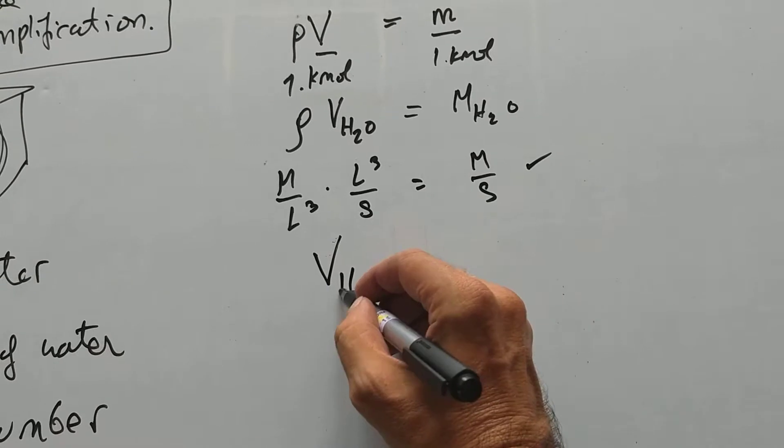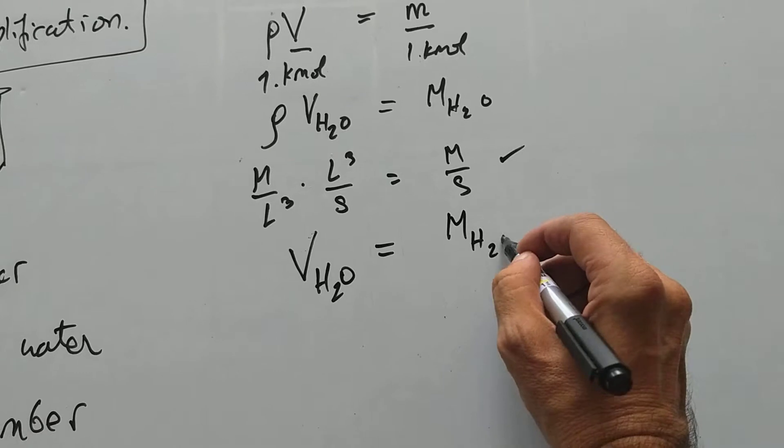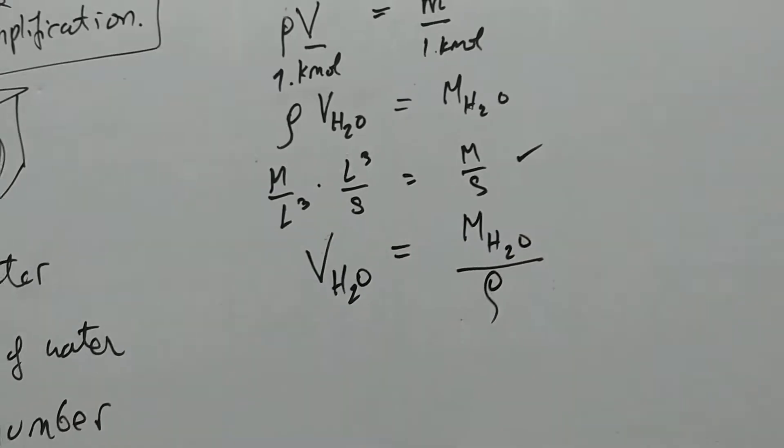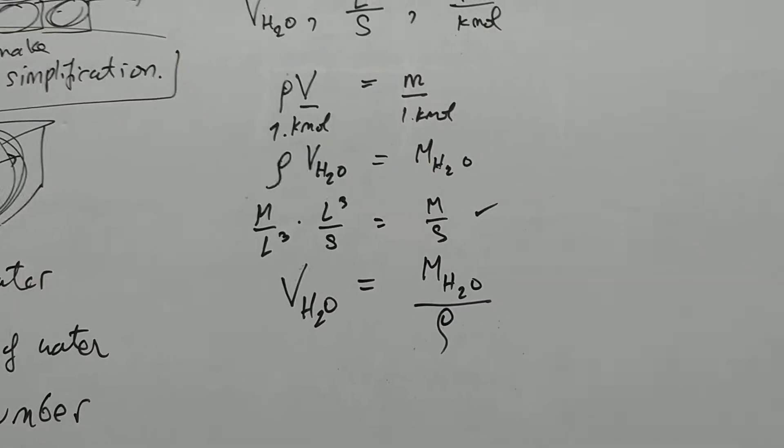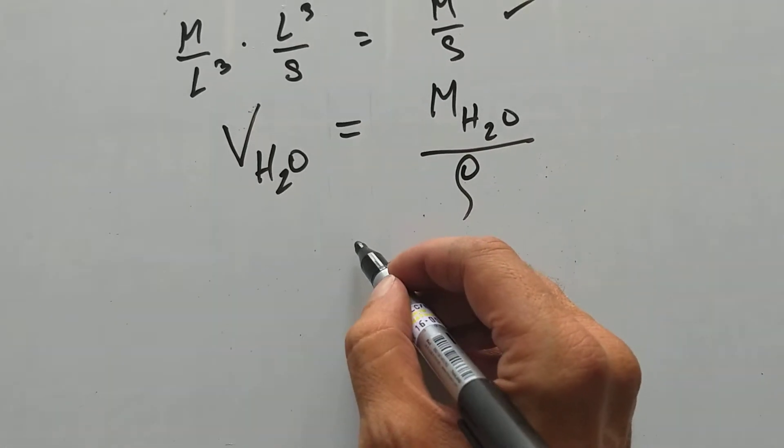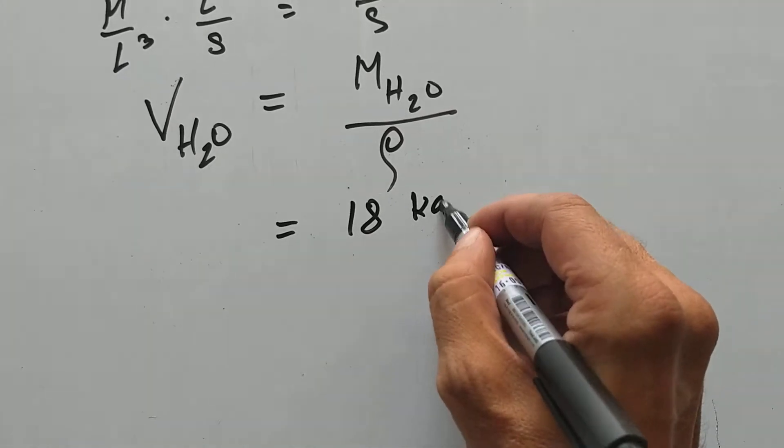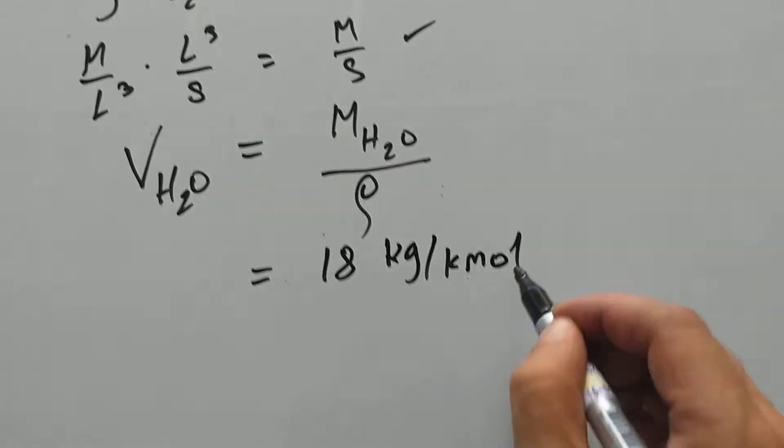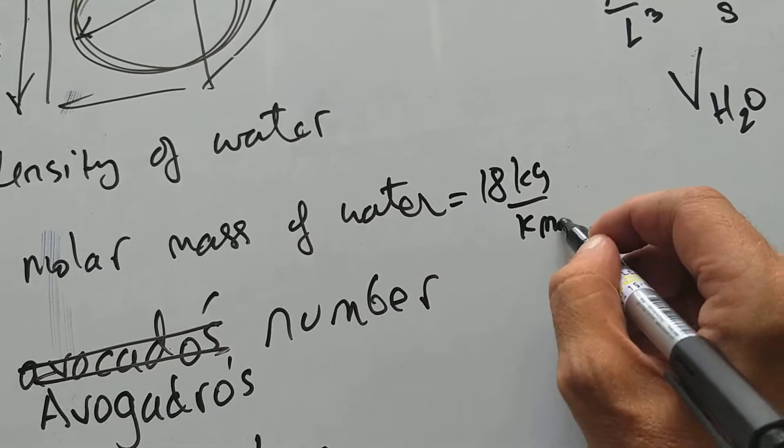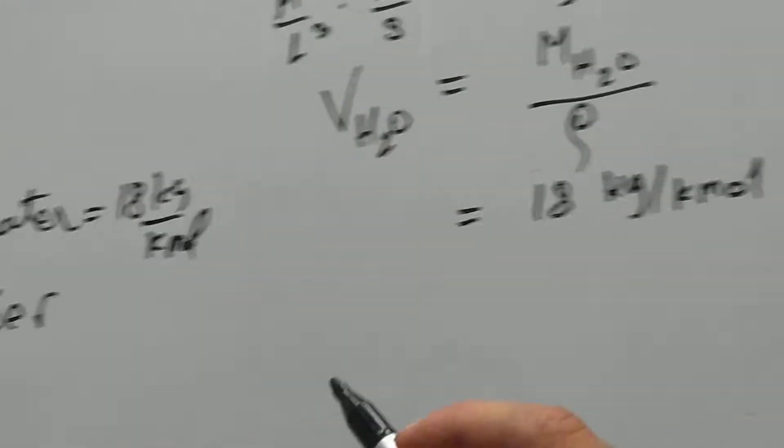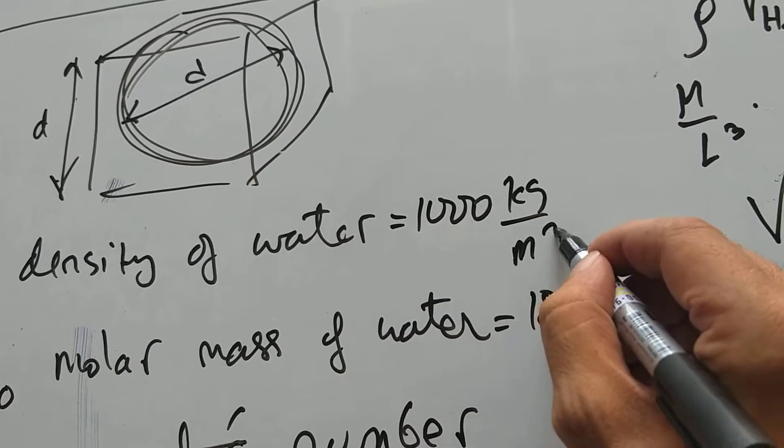So, molar volume is molar mass divided by density. This is going to tell me how much volume one mole takes up. In the case of water, this is 18 kilogram per kilomole. The molar mass of water is 18 kilogram per kilomole. And the density of water is 1000 kilogram per meter cubed.